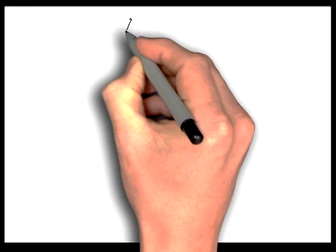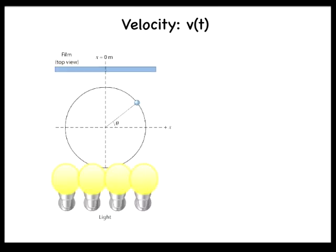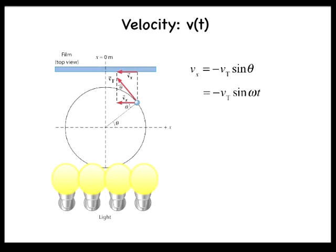Next, we want to develop an expression for the velocity as a function of time. To do this, we again utilize the reference circle and note that, at every point along its path, the ball has only a tangential velocity vt, with a constant magnitude. Note that the radius vector and the tangential velocity vector are orthogonal to one another throughout the motion. This makes the geometry straightforward, and we find that the angle between the vertical and the tangential velocity vector is theta. The projection of vt onto the screen, or the x component of the velocity, is then given by vx equals negative vt times sine theta. Again, theta is equal to omega times t, so vx equals negative vt sine omega t.